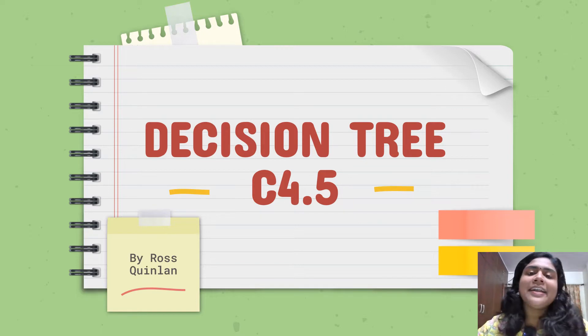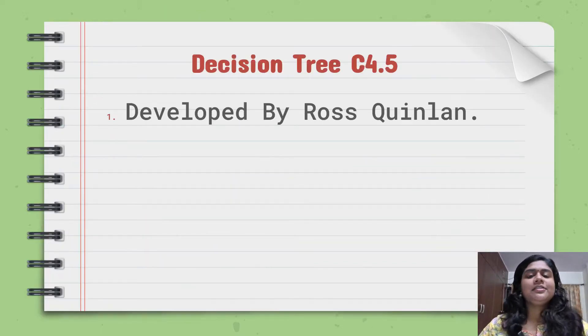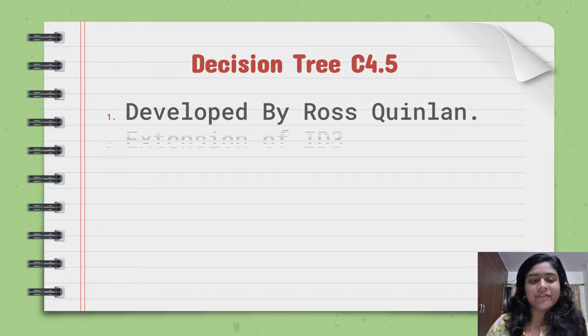And like ID3, even C4.5 is given by Ross Quinlan. Without further ado, let's get into understanding how C4.5 and ID3 are different from each other. Decision tree C4.5 was developed by Ross Quinlan. So Ross Quinlan developed ID3 and he also developed C4.5.